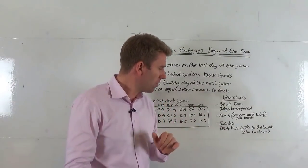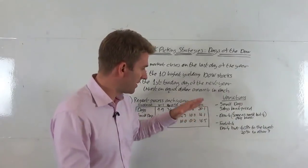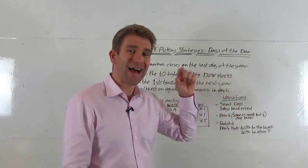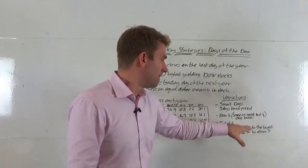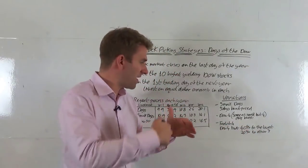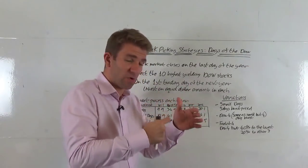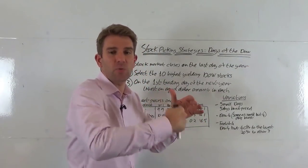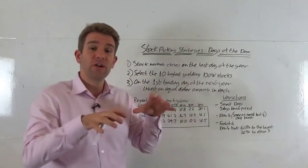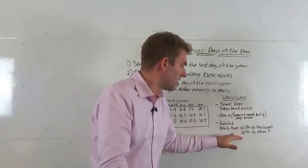The foolish four is the Dow 4, the same, sorry, the Dow 4, which is the same as the small dogs but without that cheapest one. 40% to the lowest, 20% to the other three. So you take your five, you knock off the cheapest one, you put 40% into that lowest one that you've got left, and then 20%, 20%, 20% allocating capital. So it's just exactly the same, you're just diverting more capital to the lowest price one.